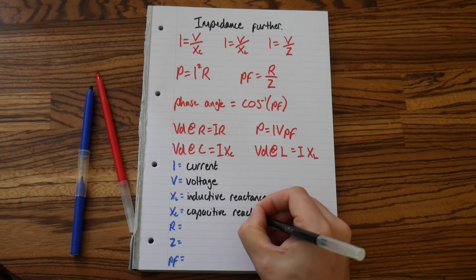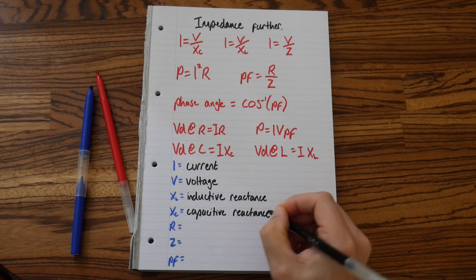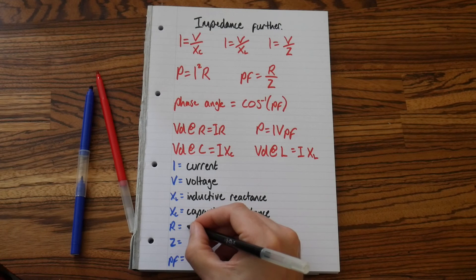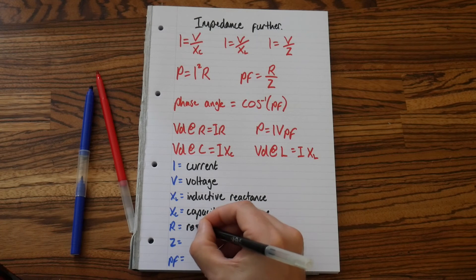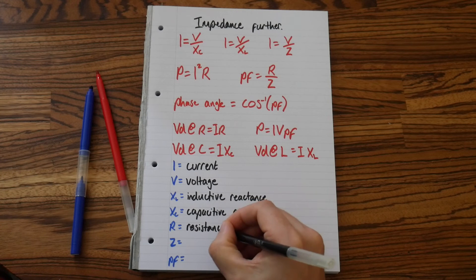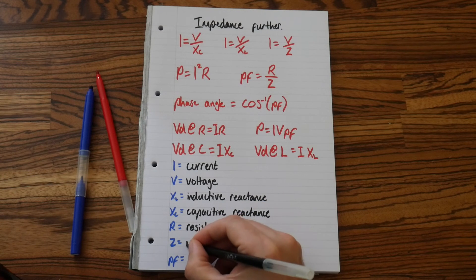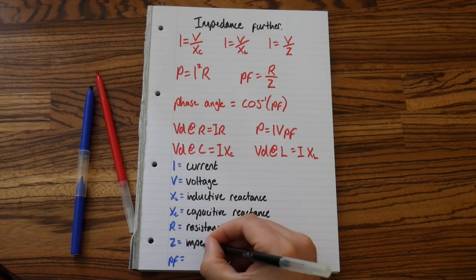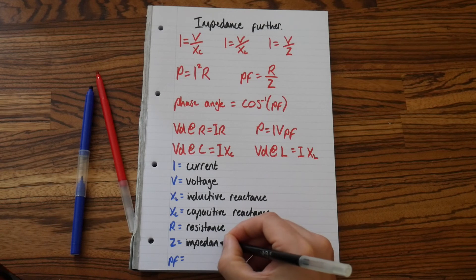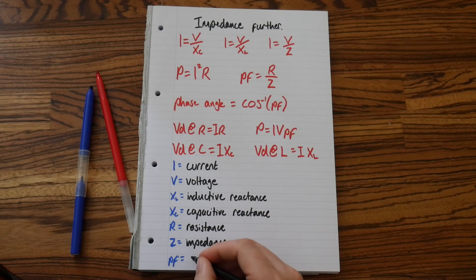R is good old fashioned resistance, Z is impedance, and PF stands for power factor.